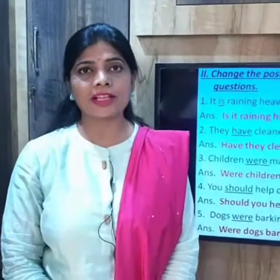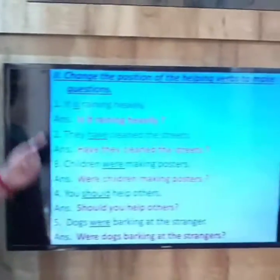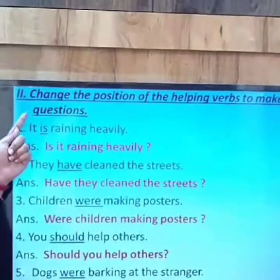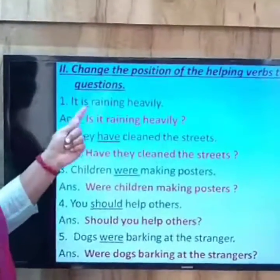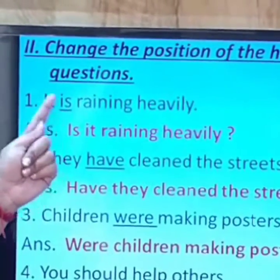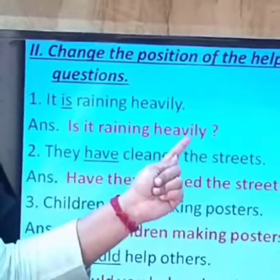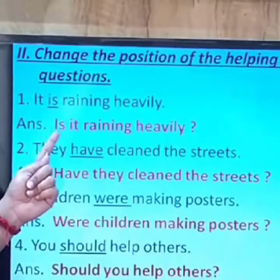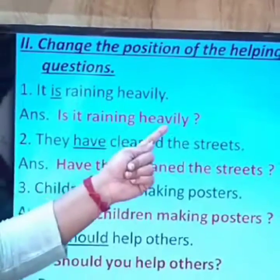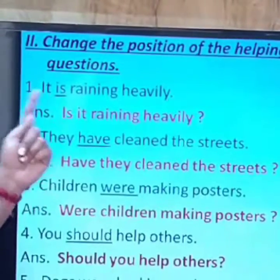Now we will look at examples where we change the position of the helping verb to make question statements — interrogative sentences. First example: 'It is raining heavily.' We put the helping verb at the beginning, and it becomes: 'Is it raining heavily?' Whenever we put the helping verb at the beginning of the sentence, it becomes a question. So it ends with a question mark.